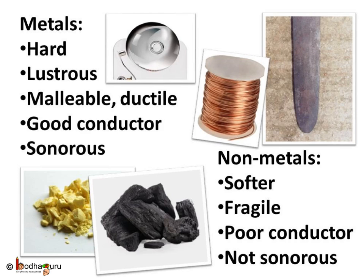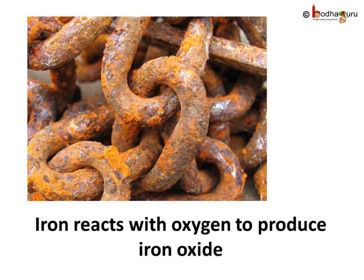So let's see the chemical properties now. We are all familiar with the rusting of iron. What is rust and how is it formed? Iron reacts with oxygen and water vapour present in the air to form rust. So rust is actually an oxide of iron.